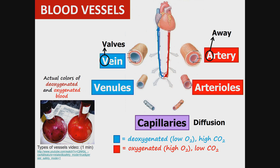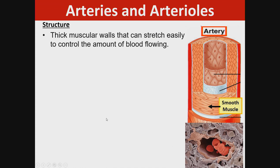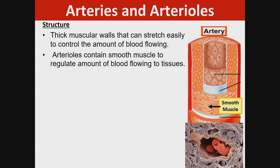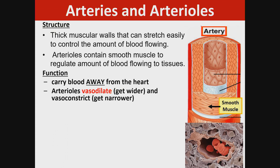The actual colors of deoxygenated and oxygenated blood are a dark red and a bright red. Arteries have thick muscular walls that can stretch easily to control the amount of blood flowing. Arterioles contain smooth muscle to regulate the amount of blood flowing to tissues. The arterioles can vasodilate — get wider — and vasoconstrict — get narrower.